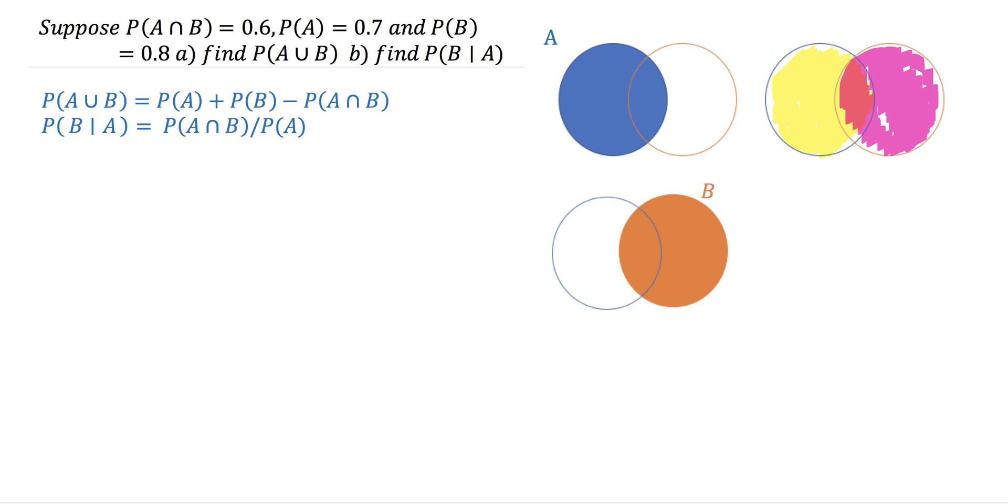You can see it's kind of meshed, the yellow and the pink there in the middle. I'll maybe put it in green. You see we've got two of these middle sections, so we have to minus one. And what is that middle section? Well, it's A intersect B.